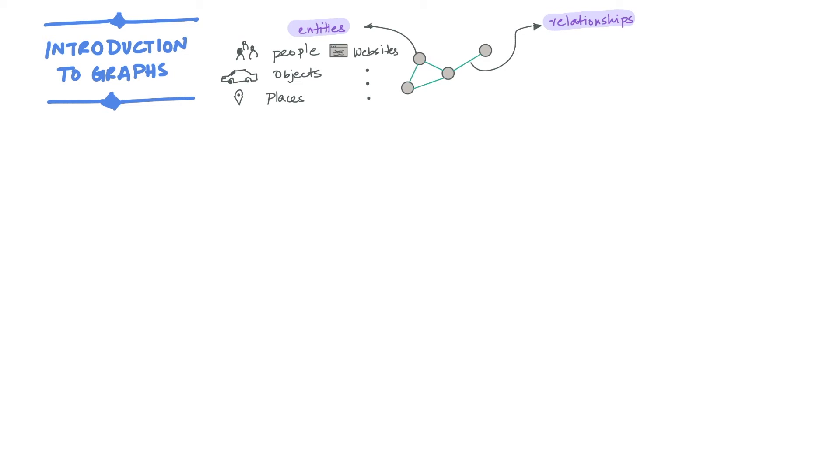While relationships depict things like who is friends with whom, who owns what, are two places connected by a road, what are the links going from one website to another, etc. Entities are commonly referred to as nodes in graph lingo, while edges represent relationships.